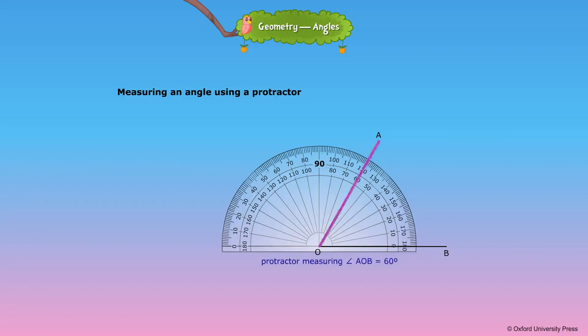Step 3: Read the measure of the angle where the other arm, ray OA or OB, crosses the scale.